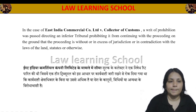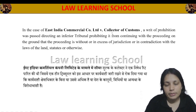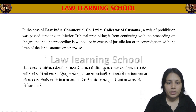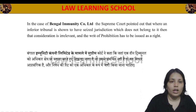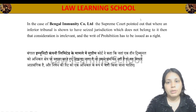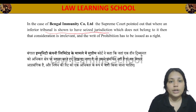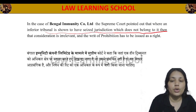The case of Indian Commercial Co. Ltd. vs. Collector of Customs is an important case on the writ of Prohibition, where it was held that the inferior tribunal should cease jurisdiction when it exceeds its authority.